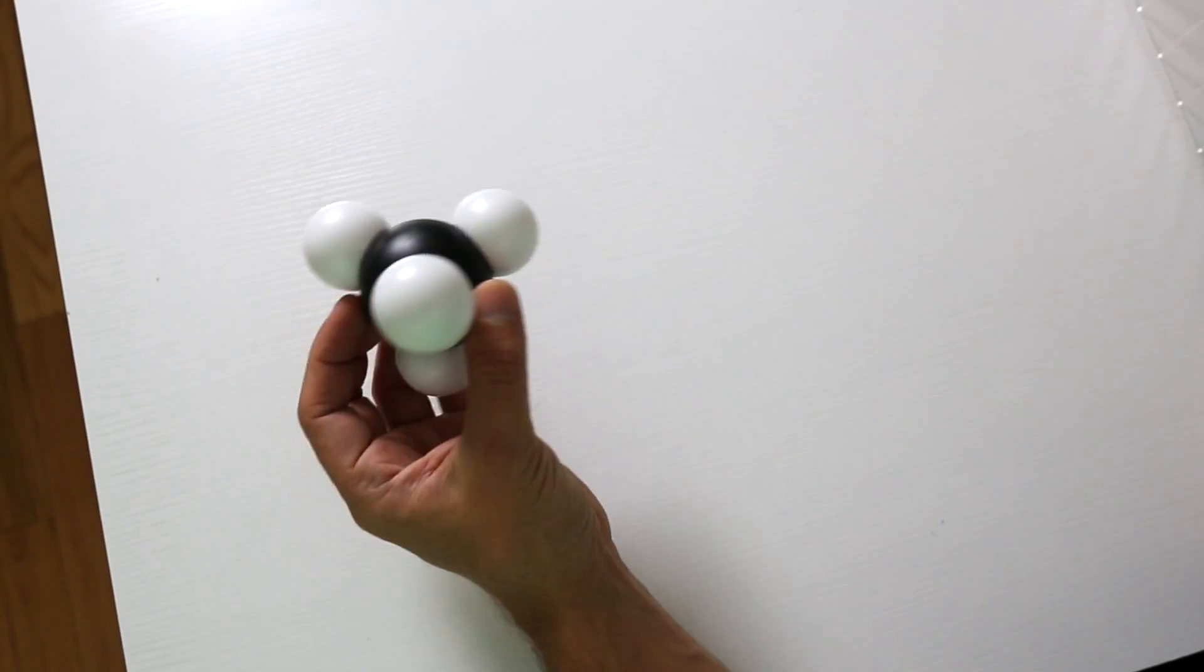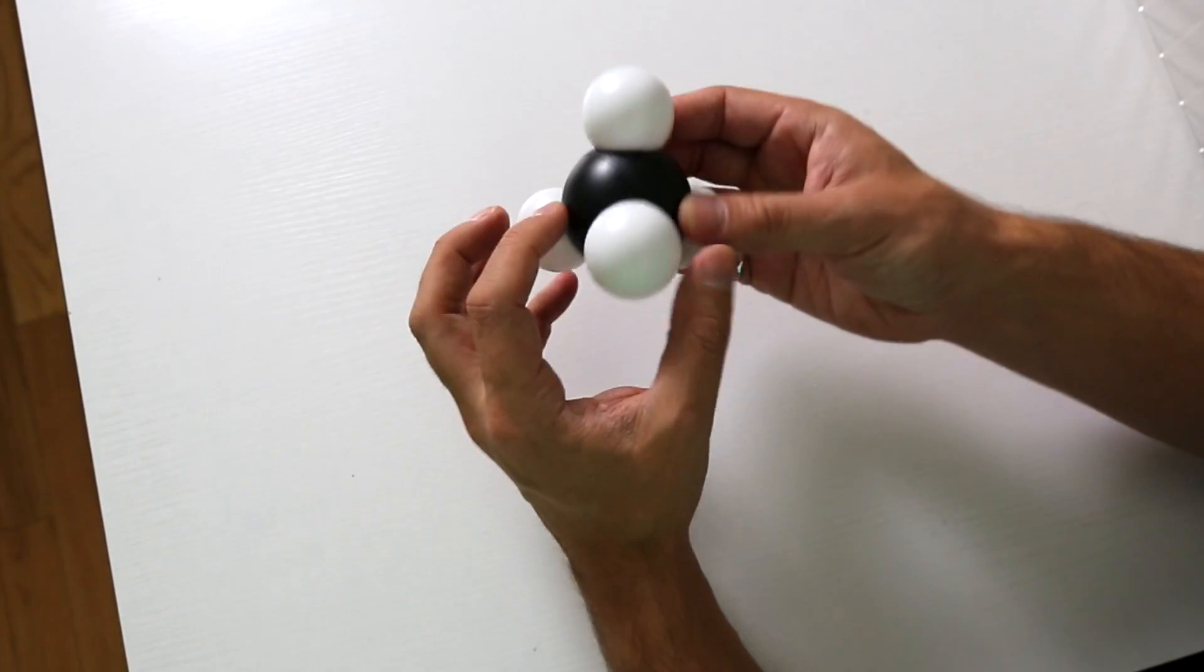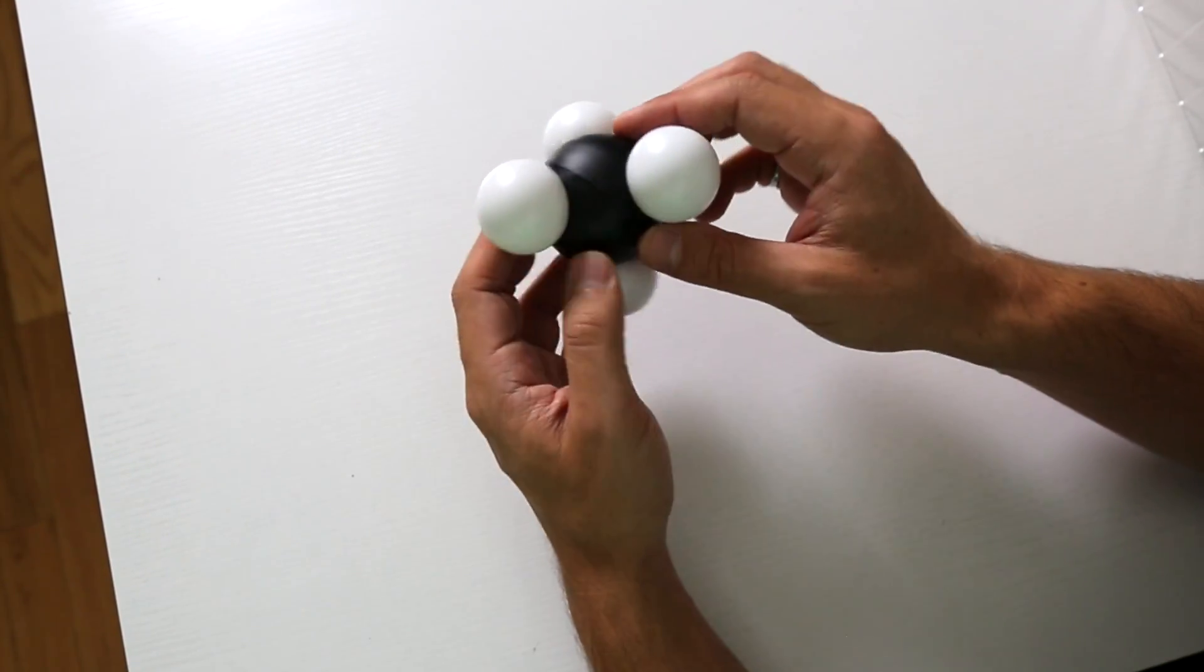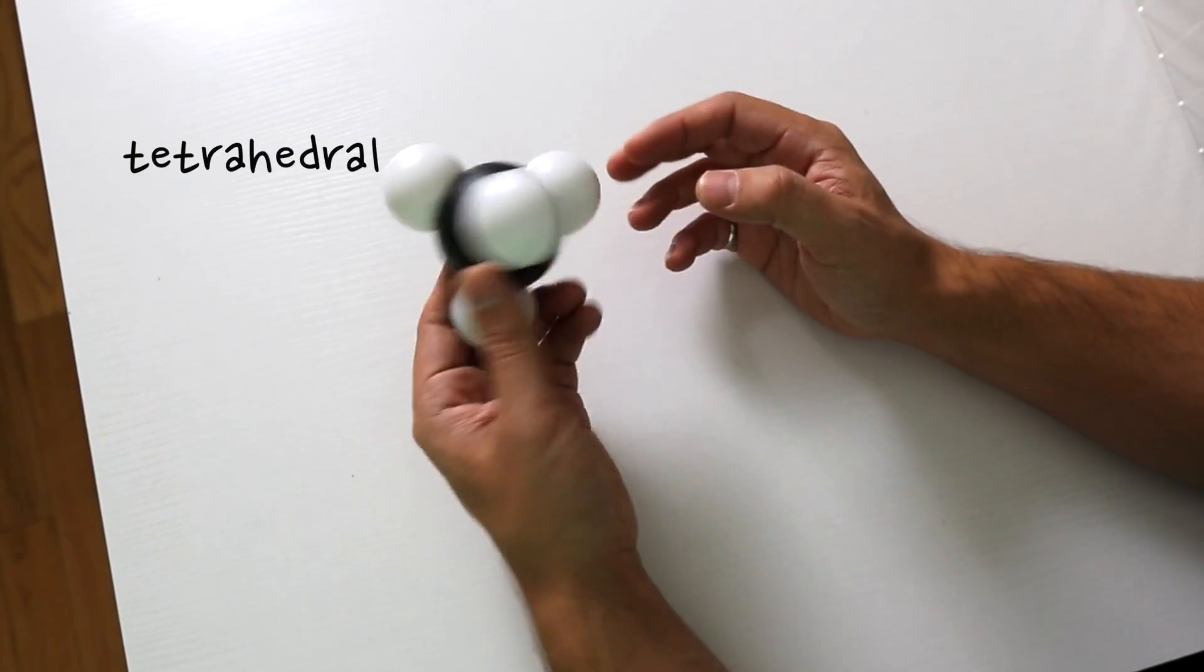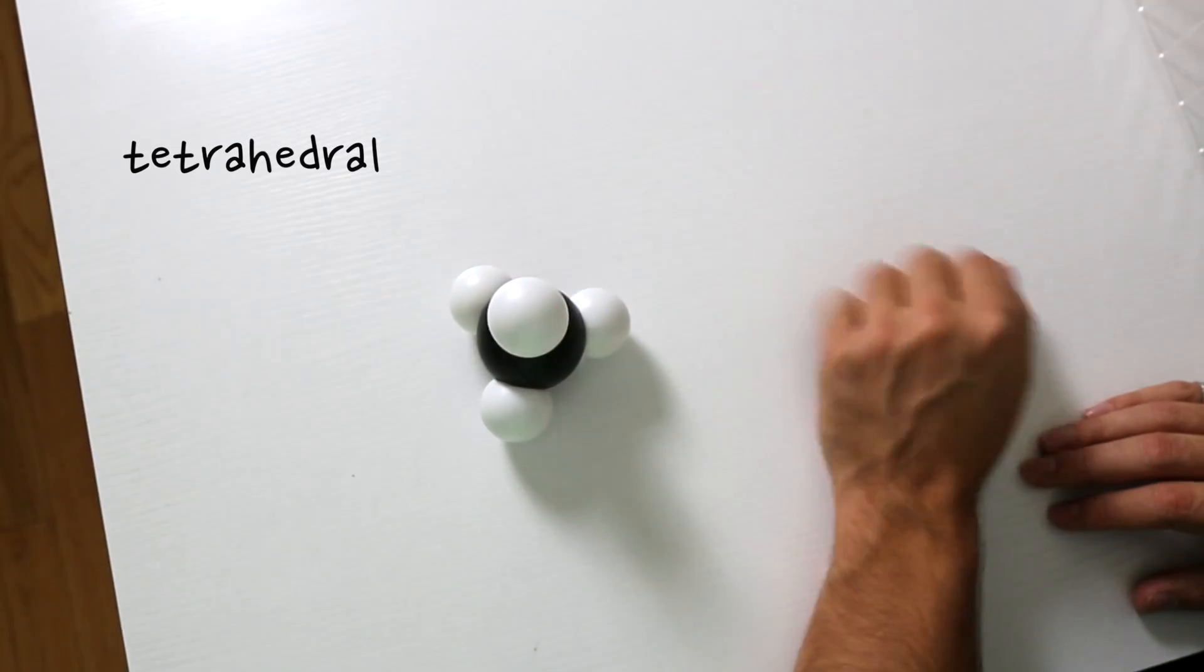And what you'll notice is these hydrogens have all spaced themselves out so they are all as far apart from each other as they possibly can be in three dimensions. This is called a tetrahedral structure, and that's the way that molecules like this will go.